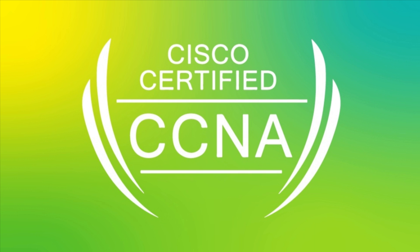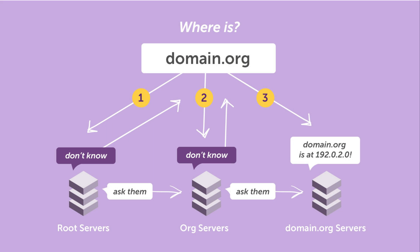Now for some honorable mentions. If you're watching to study for a CCNA, Security Plus, or Network Plus quiz, you can probably skip these, but it might be handy to know them anyway. Port 43 is used by the WHOIS protocol, used for querying databases that store information about the registered user of a domain name or block of IP addresses. You may have used a WHOIS tool online to find out who owns a particular website.